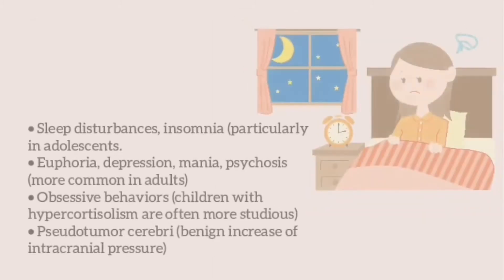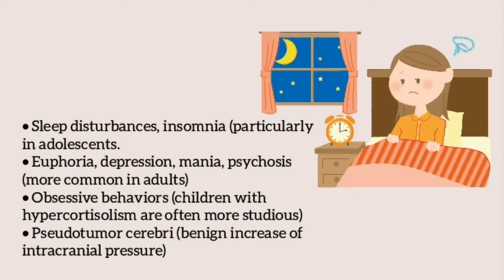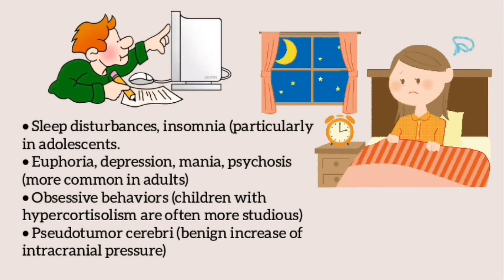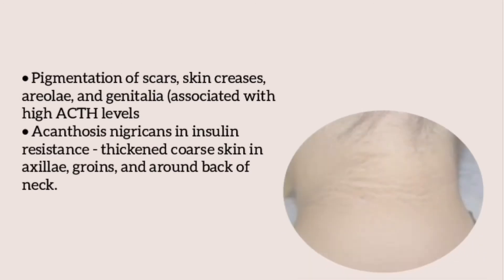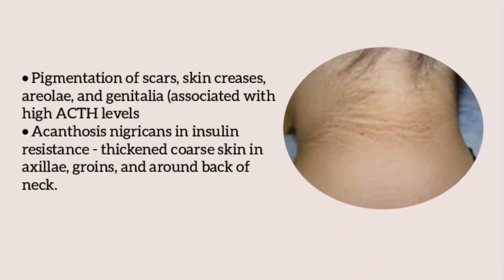Posterior subcapsular cataract may be present, especially in exogenous Cushing syndrome, and can be examined by slit-lamp examination. In Cushing syndrome, there may be sleep disturbances or insomnia. Euphoria, depression, mania, and psychosis may occur, but these are more common in adults; in children, obsessive behavior is more common and they may seem more studious in school. Pseudotumor cerebri — benign intracranial hypertension — may also occur. Pigmentation of scars, skin creases, areolae, and genitalia may be seen, especially with high ACTH levels.